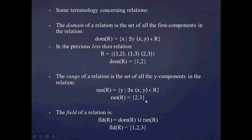So now the field of a relation — this may be new. We're going to define the field of a relation as just the union of the domain of R with the range of R. So we already have the domain of R as {1, 2} and the range of R as {2, 3}, so we just take the union of the two sets. The field of R is going to be {1, 2, 3}.